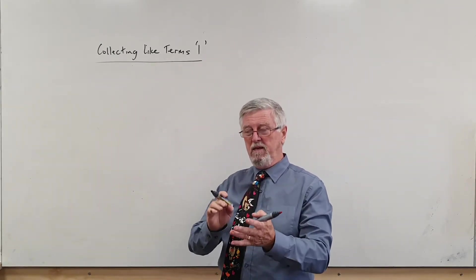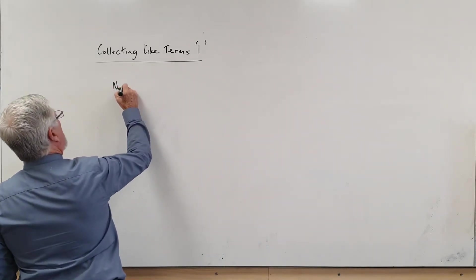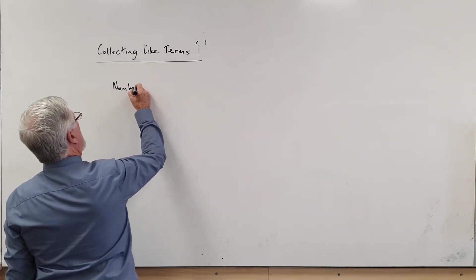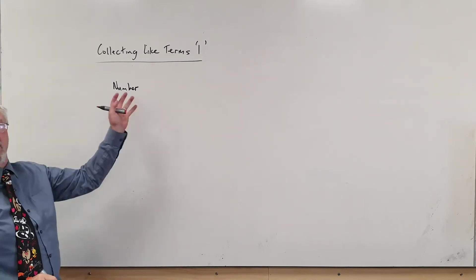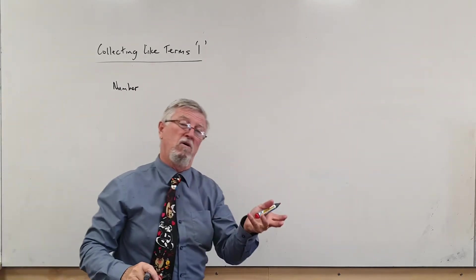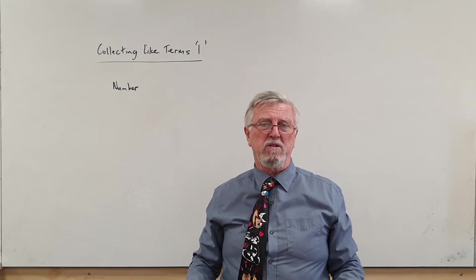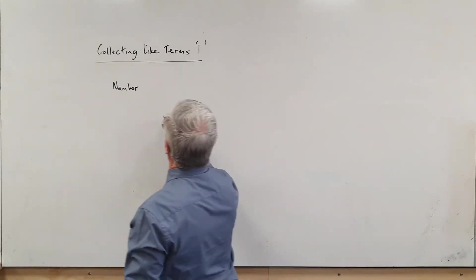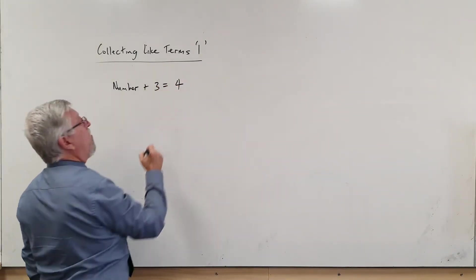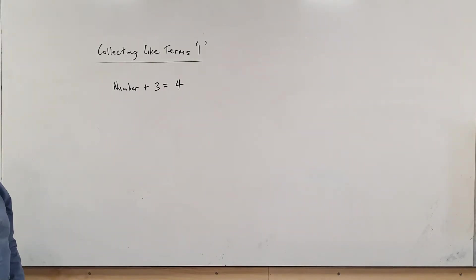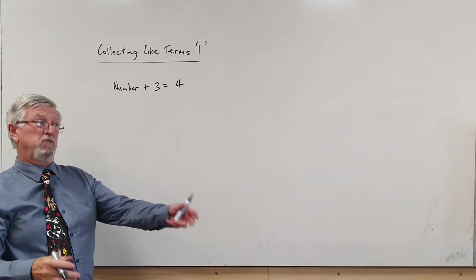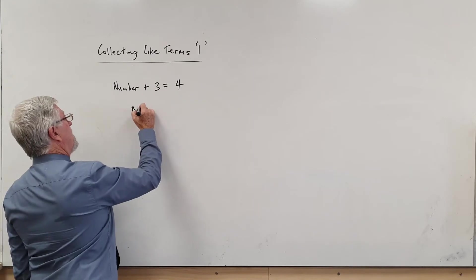So I could write the word 'number,' and historically some of the stuff I've learned years ago is they used to write the word 'number' from the idea of trying to solve something. So if I said I had a number plus three equals four, what's the number? Most of you look at it and say, well, one plus three is four, so the number in this case is one.